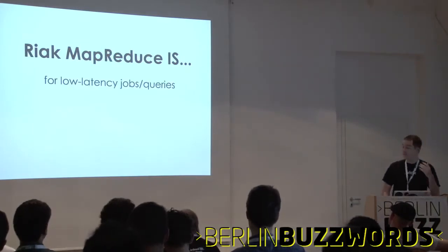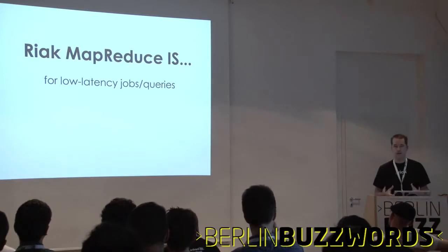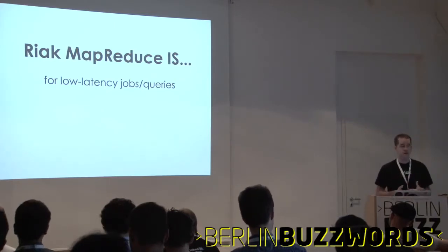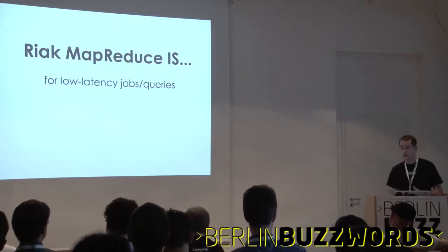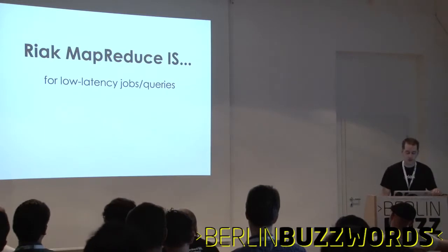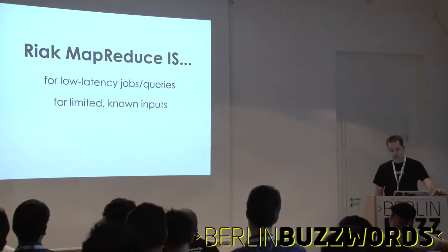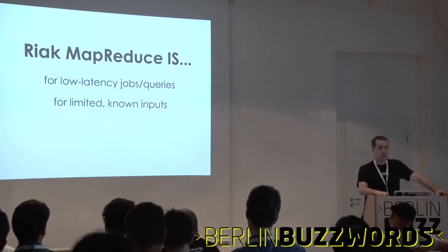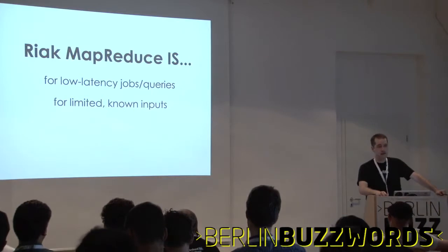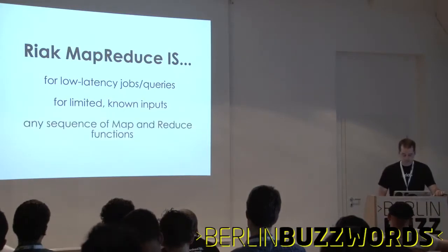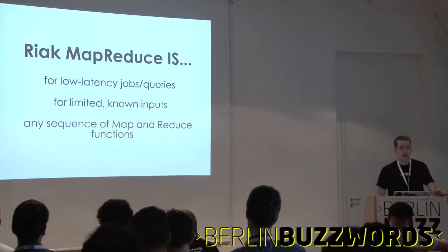Riak MapReduce is for low-latency queries — to be completed within a single web request, for example. We encourage using limited, well-known inputs. It's a big bonus if your data is structured such that you know the keys you're looking for. As long as you can tell Riak MapReduce what those keys are, you'll be in better shape. It lets you do any sequence of map and reduce functions.